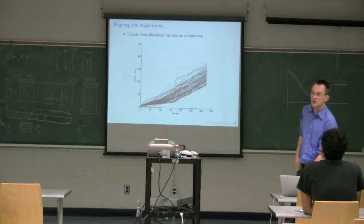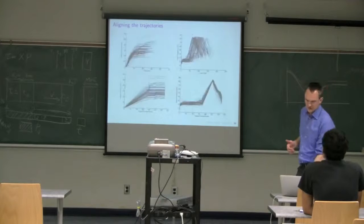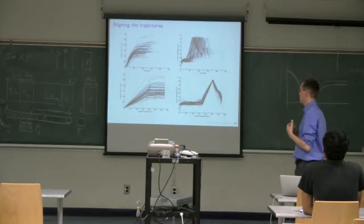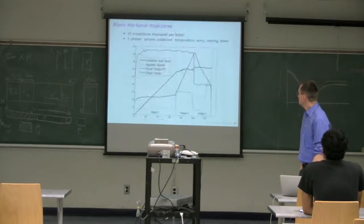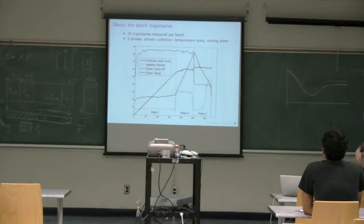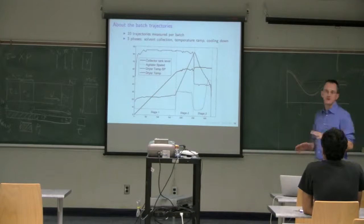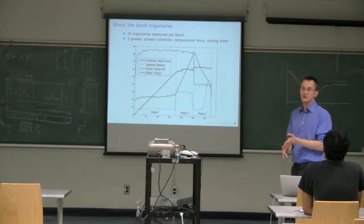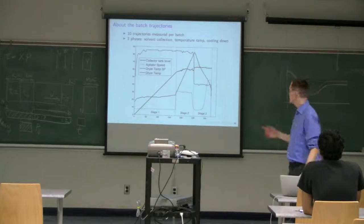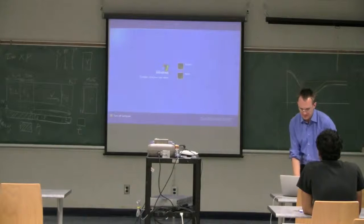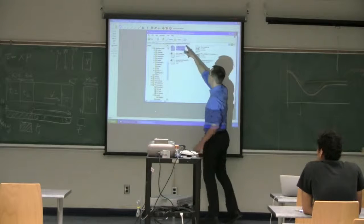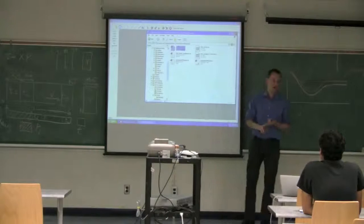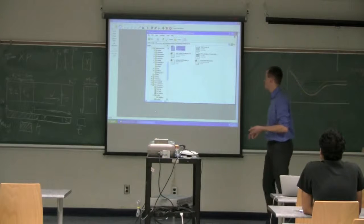Alignment does remove some information by artificially stretching and shrinking the data, but you want to capture that information back again by including the warped time variable. This data set is available on the course website and distributed inside the software — under Documents and Settings, My Documents, CoAV, Projects. All trajectories, all information, and all final quality properties are in there under FMC CoAV.